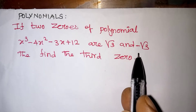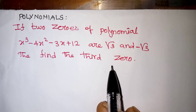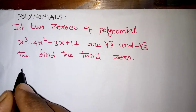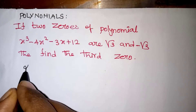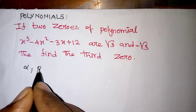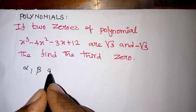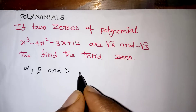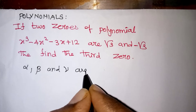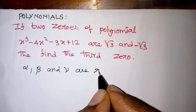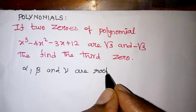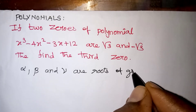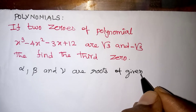Root 3 and minus root 3 are two zeros — find the third zero is our question. So let us assume alpha, beta, and gamma are the three roots of the given polynomial.